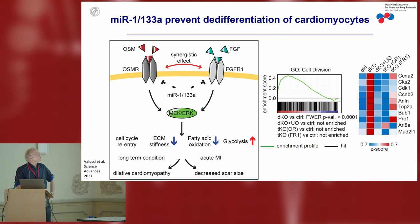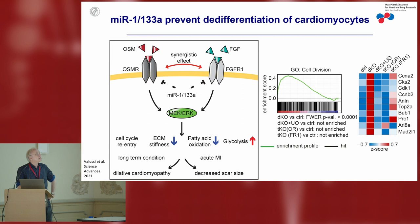Just to illustrate that the effects of these microRNAs on de-differentiation are really mediated via these receptors: we generated triple knockout mice in which we inactivated, on top of these two microRNA clusters, also the OSM receptor and the FGF receptor. Compared to controls, there is a strong normalization of these different cell cycle-related genes. The normalization is more pronounced if we inactivate the OSM receptor compared to the FGF receptor.